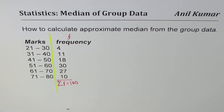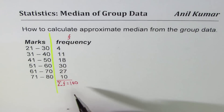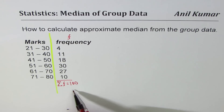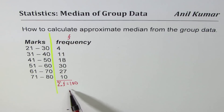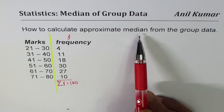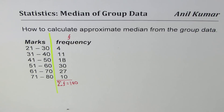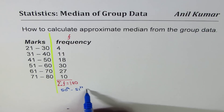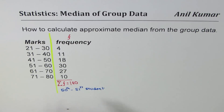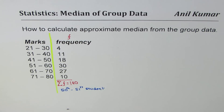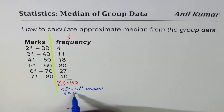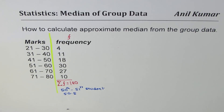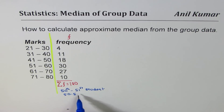I have purposely taken values which are easier to work with. So total number of students is 100. When we talk about the median, we are looking for the person right at the center. Since we have an even number, the center point is between the 50th and 51st student, giving a median position of 50.5.